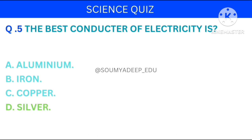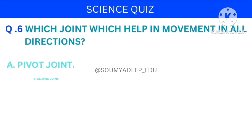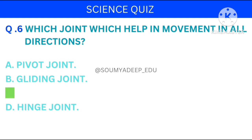Which joint helps in movement in all directions? The options are: pivot joint, gliding joint, ball and socket joint, hinge joint. Your time starts now. The answer is ball and socket joint.